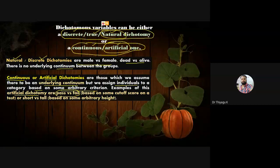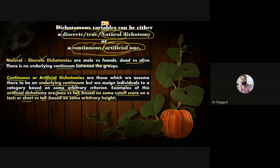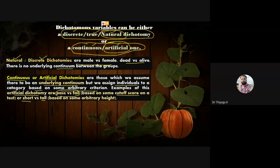In pass or fail, we artificially fix a cutoff score. Similarly, if I want to divide people into short and tall, I have to fix some norm or arbitrary threshold. Only then can I classify who is short and who is tall. This is called artificial dichotomy.